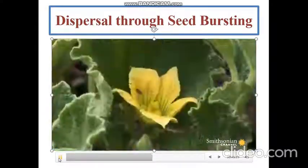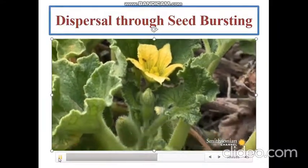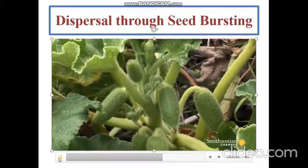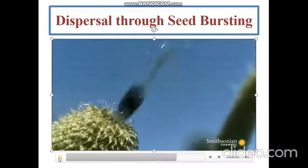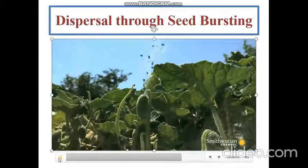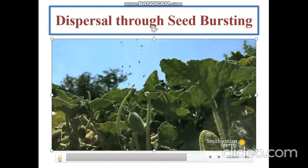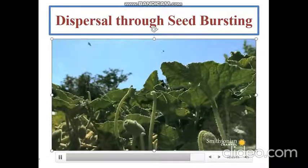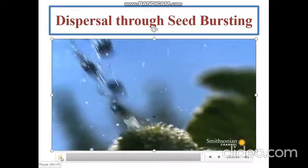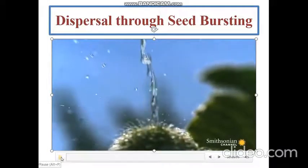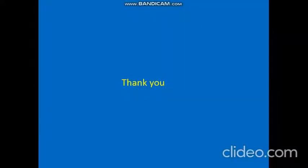Here is another example — it's a kind of cucumber, and when it gets ripe, the seeds inside just start bursting out. I hope now you all have a clear understanding of dispersal of seeds and its agents.